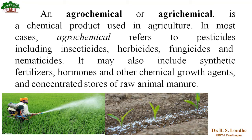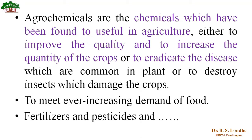Agrochemicals, also sometimes known as agrichemicals, are chemical products which find their uses in agriculture. In most cases, agrochemicals refers to pesticides including insecticides, herbicides, fungicides, and nematicides. They may also include synthetic fertilizers, hormones, other chemical growth agents, and concentrated stores of raw animal manure. So agrochemicals are chemicals used in agriculture either to improve quality, increase quantity, eradicate disease on the crop, or destroy insects which damage crops.